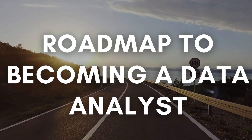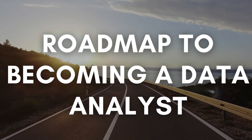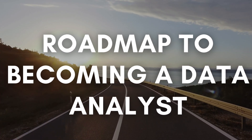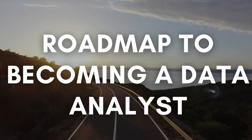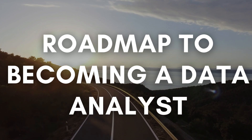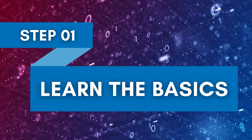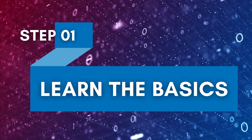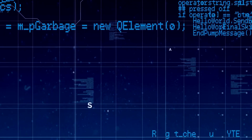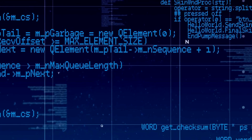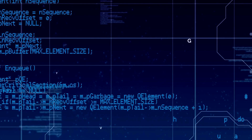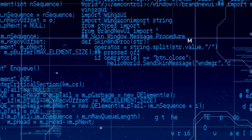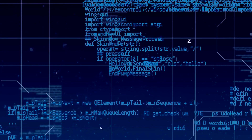A roadmap to becoming a data analyst. Now that we have discussed the skills required, let's move on to the roadmap. Here is a step-by-step guide to help you become a data analyst. Step 1: Learn the basics. Start by learning the basics of data analysis. This includes learning programming languages such as Python, R, and SQL. You can take online courses or attend boot camps to learn these skills.